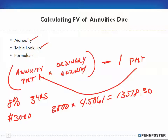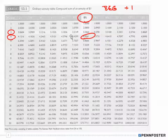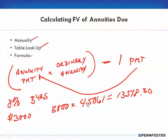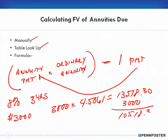But we're not finished. We adjusted for the annuity due by adding one period, which changed our factor from the ordinary annuity factor of 3.2464. Since we're now looking at four periods instead of three, we have to subtract out one payment. So $13,518.30 minus $3,000 gives us a future value of $10,518.30 for the annuity due.